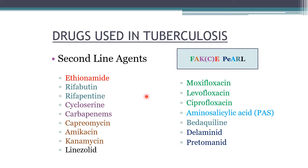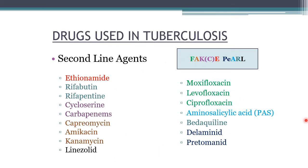Use the mnemonic FAKE PEARL (with C for K) to remember second-line drugs: F = Fluoroquinolones (moxifloxacin, levofloxacin, ciprofloxacin — moxifloxacin is most active); A = Aminoglycosides (capreomycin, amikacin, kanamycin — given parenterally); C = Cell-wall synthesis inhibitors (cycloserine, carbapenems); E = Ethionamide; P = Pretomanid; A = Aminosalicylic acid; R = Rifamycin derivatives (rifabutin, rifapentine); L = Linezolid. Bedaquiline is also an important second-line agent.